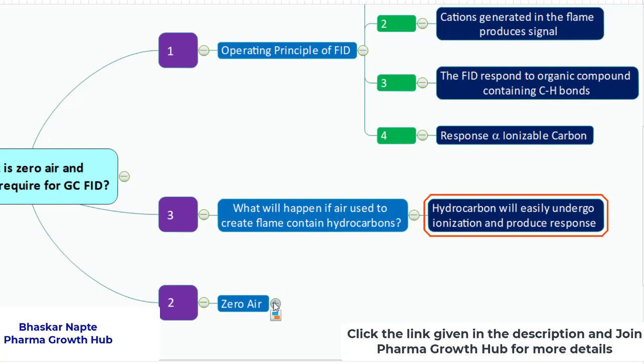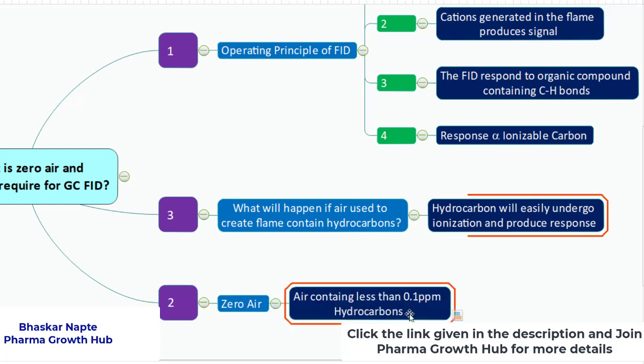Now practically, is it possible to have air with zero hydrocarbons? May not. And hence there is a limit given to it. Air containing less than 0.1 ppm hydrocarbons is called zero air.